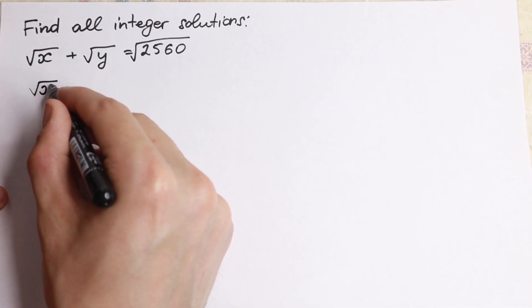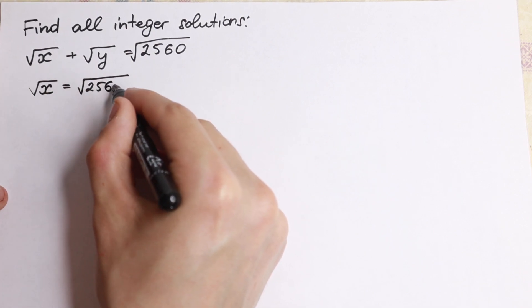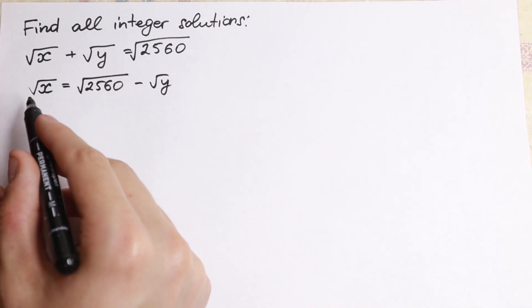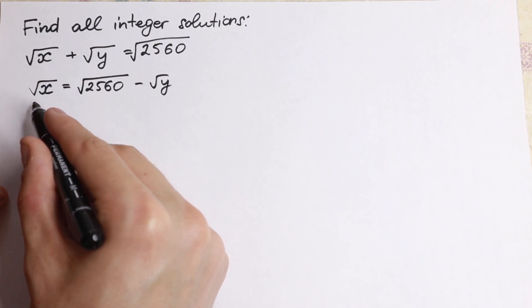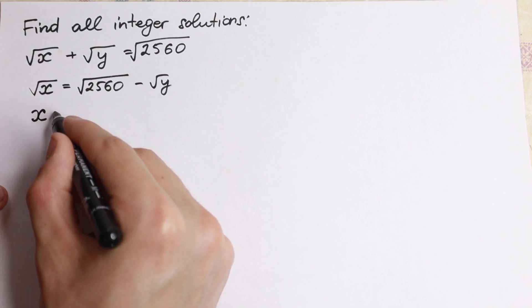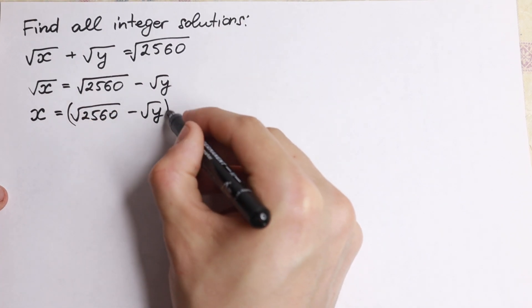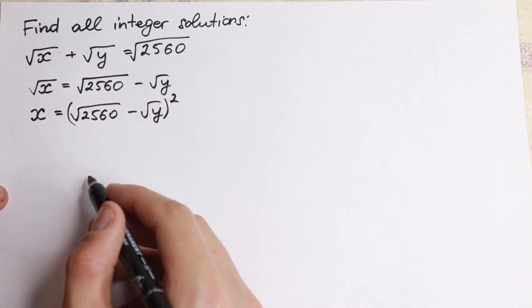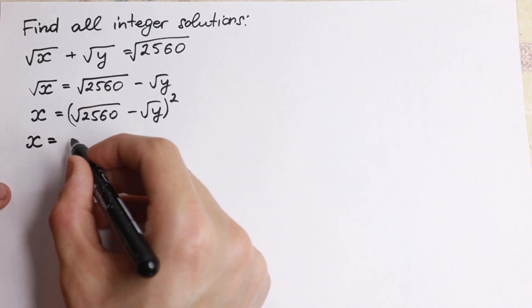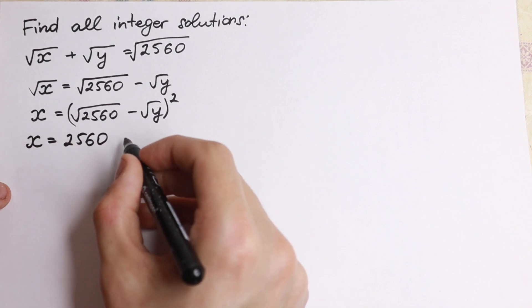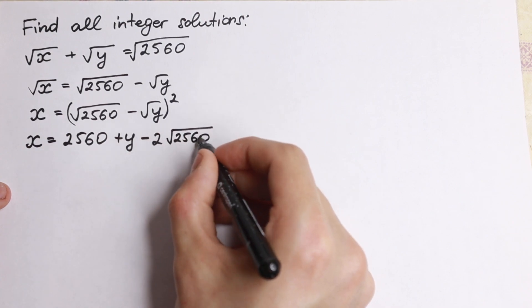First of all, let's bring the square root of y to the left-hand side, so we have square root of x equal to square root of 2560 minus square root of y. We need x and y without the square root, so we raise both sides to the second power. On the left we get x, and on the right we expand (a - b)² = a² - 2ab + b², giving us x equal to 2560 plus y minus 2 times the square root of 2560 times square root of y.